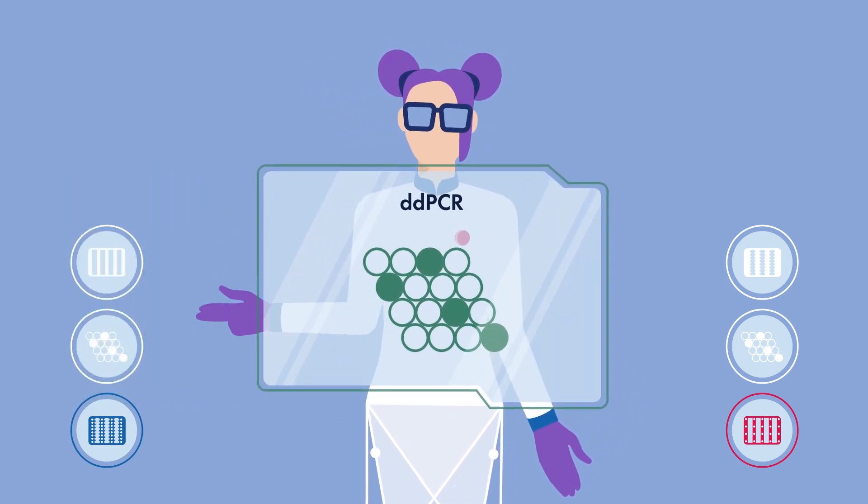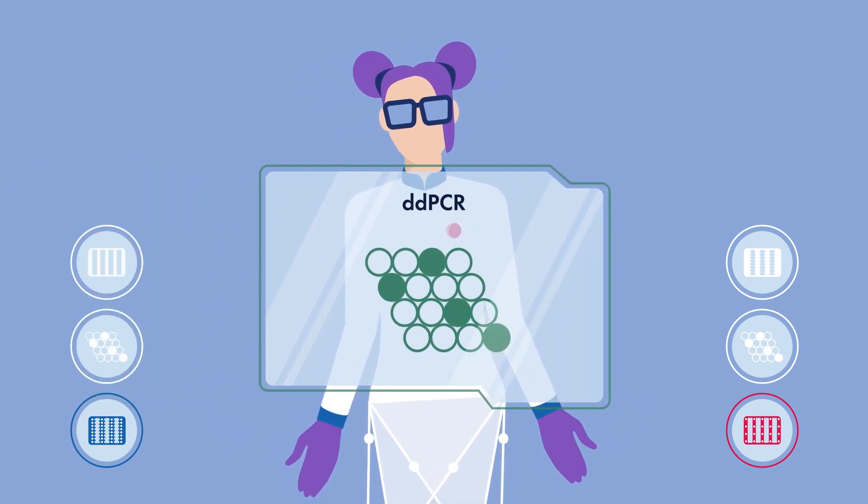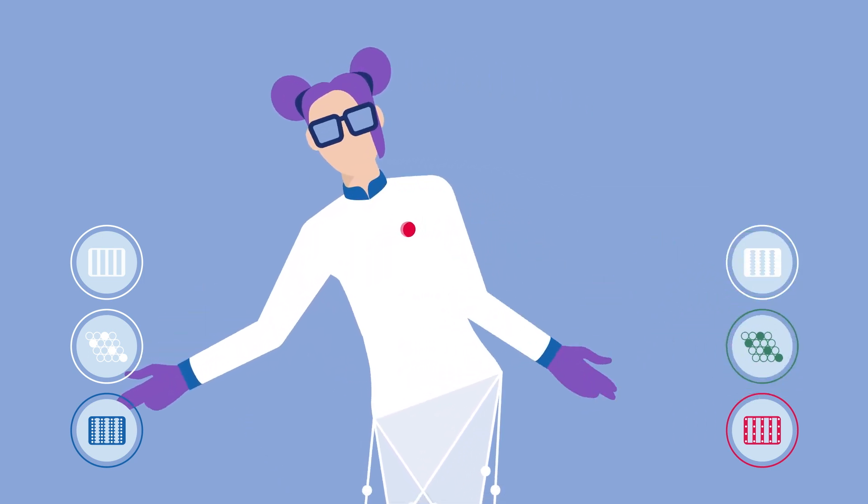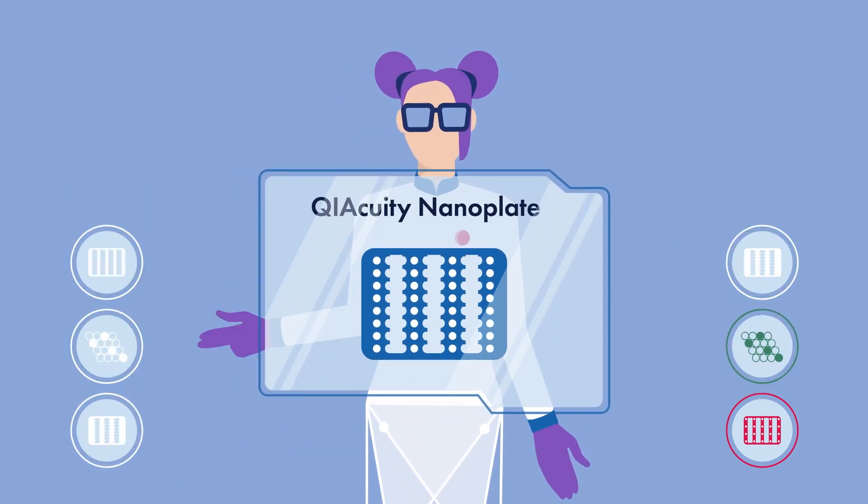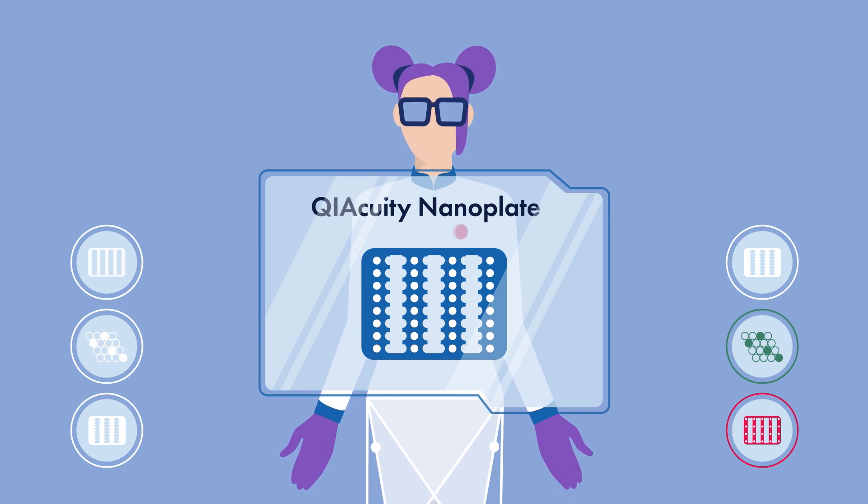Droplets are more fragile and hence might burst, leading to high dead volume. On the other hand, nanoplate-based dPCR is not affected because of the solid nature of the chambers.